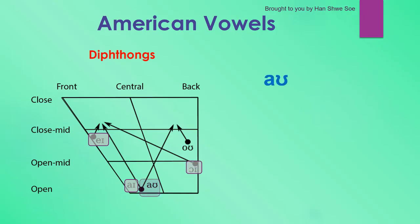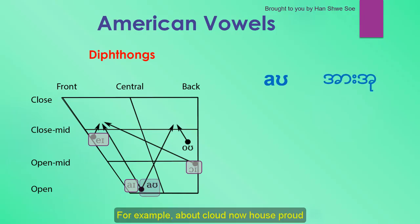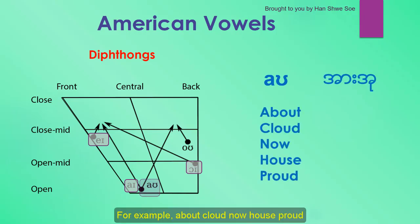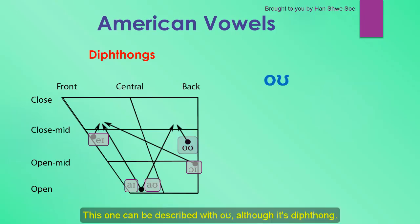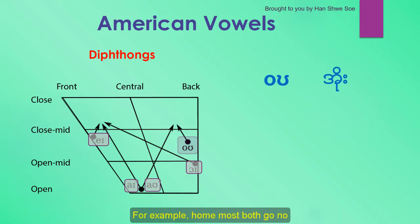The next diphthong is the AW sound. For example: about, cloud, now, house, proud. The last diphthong can be described with O, although it's a diphthong. For example: home, most, both, go, know.